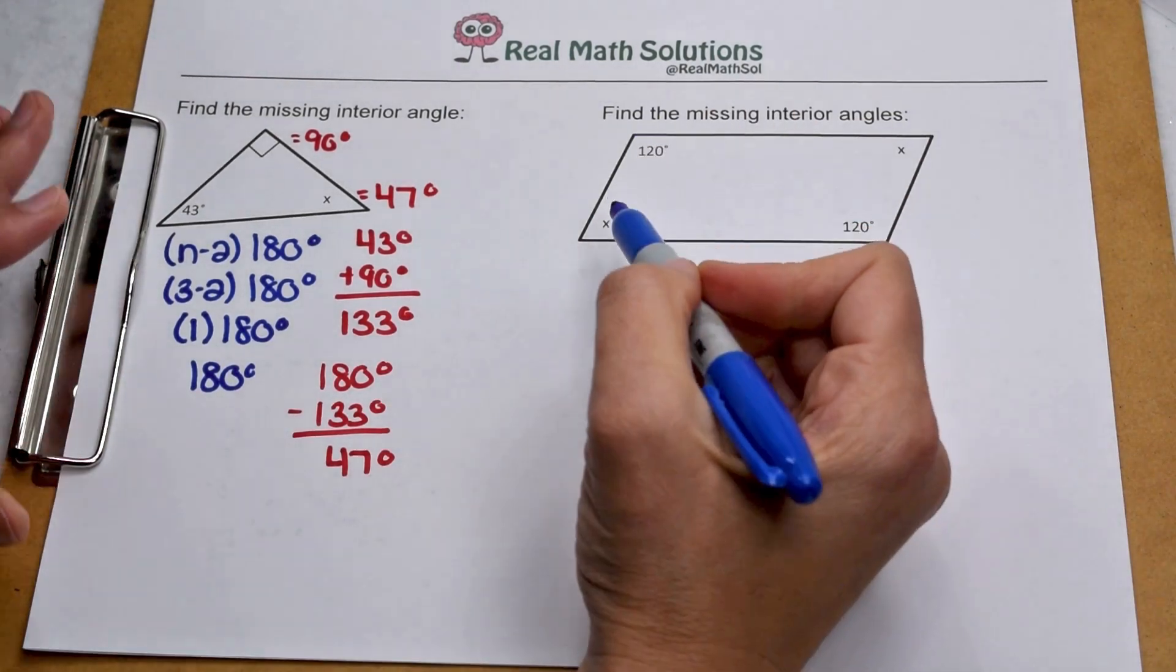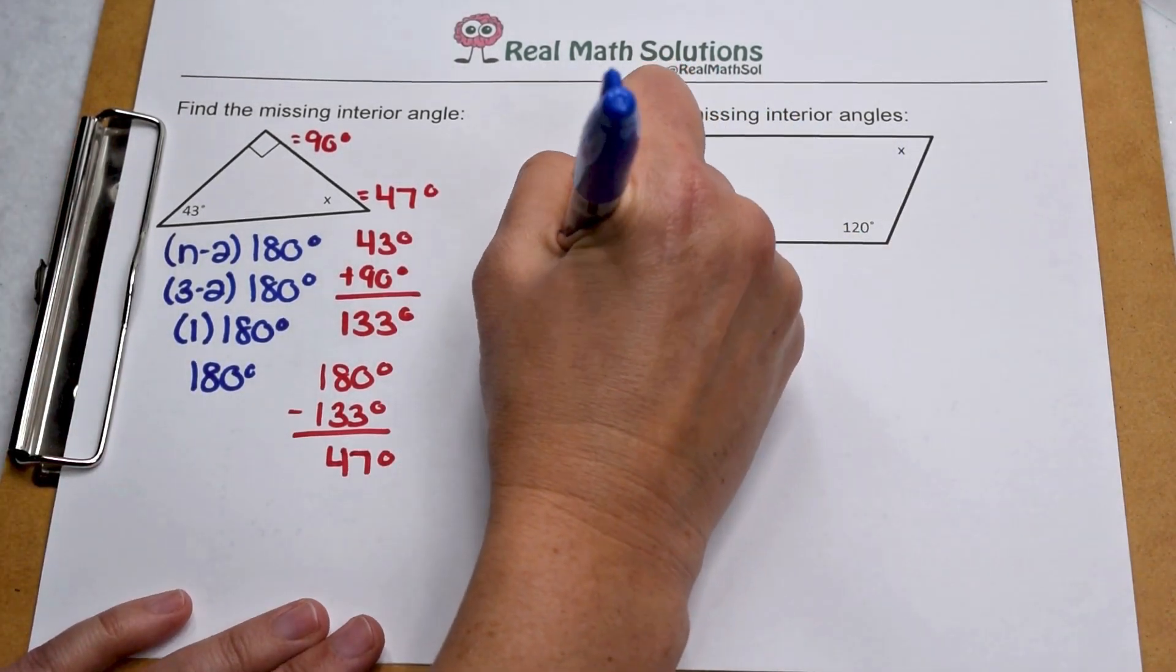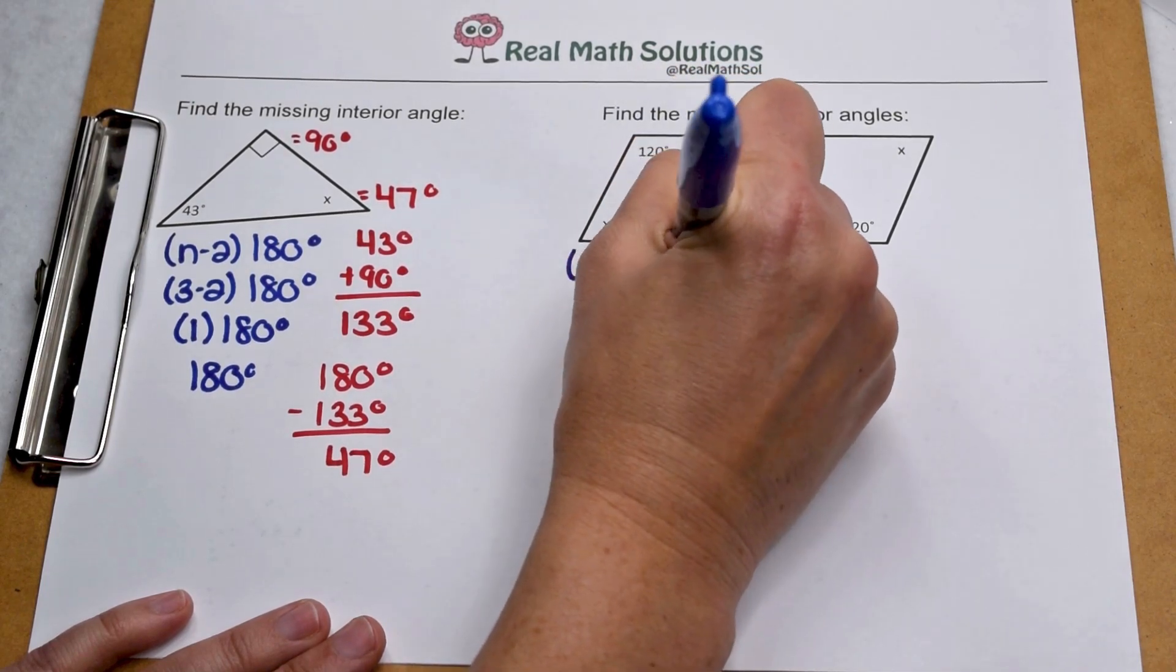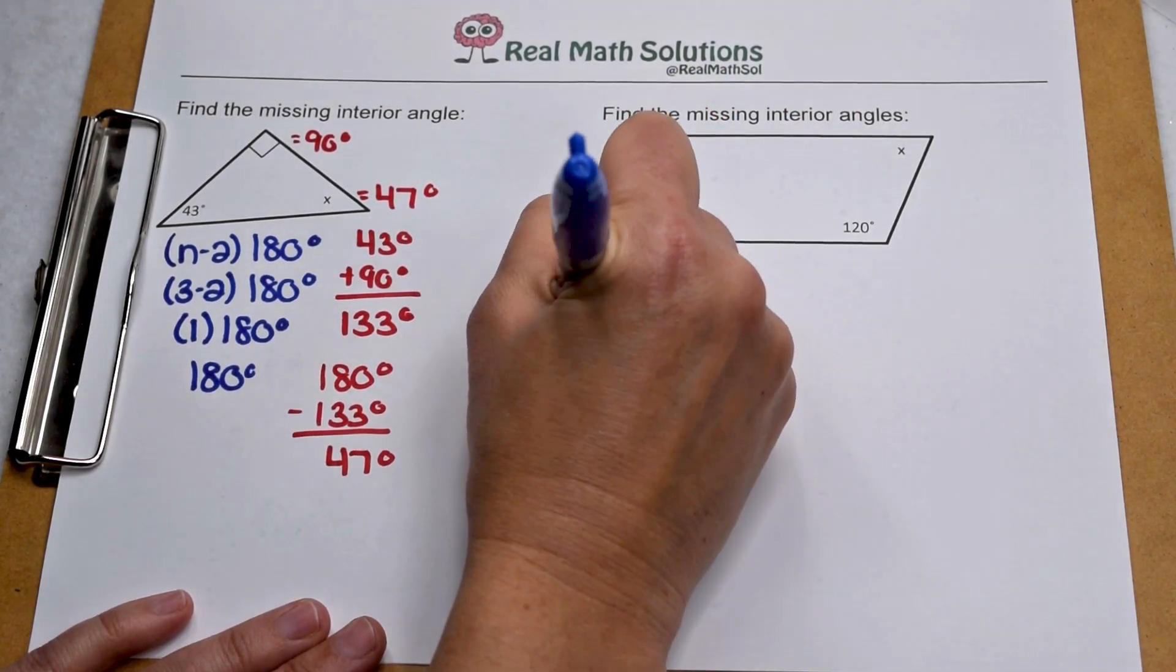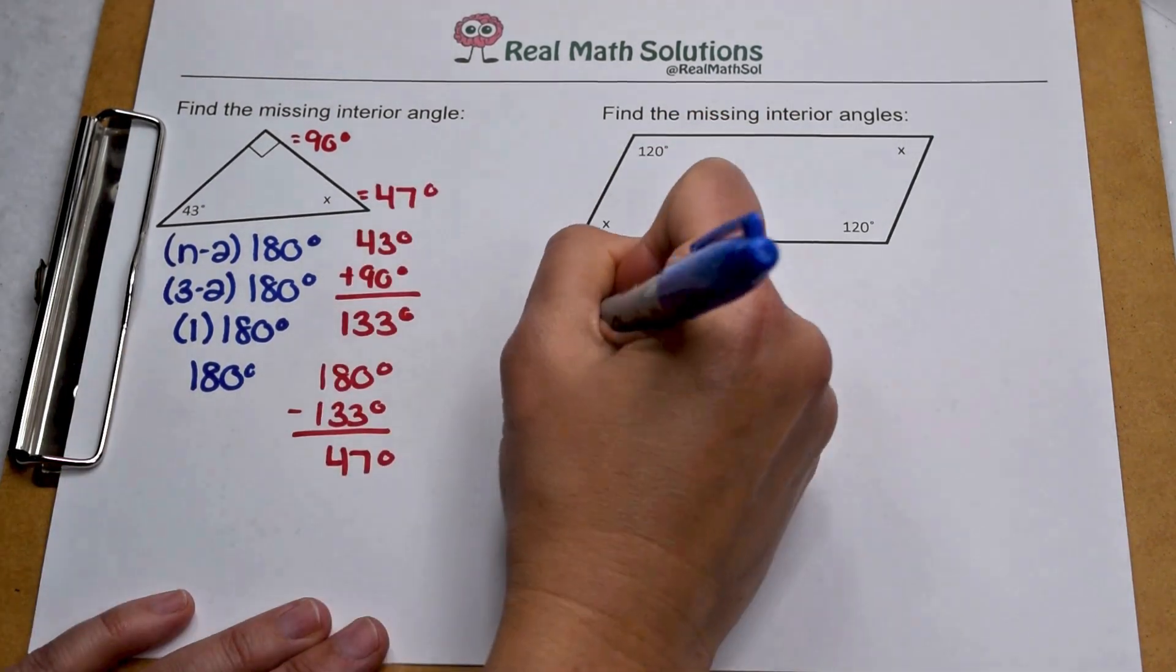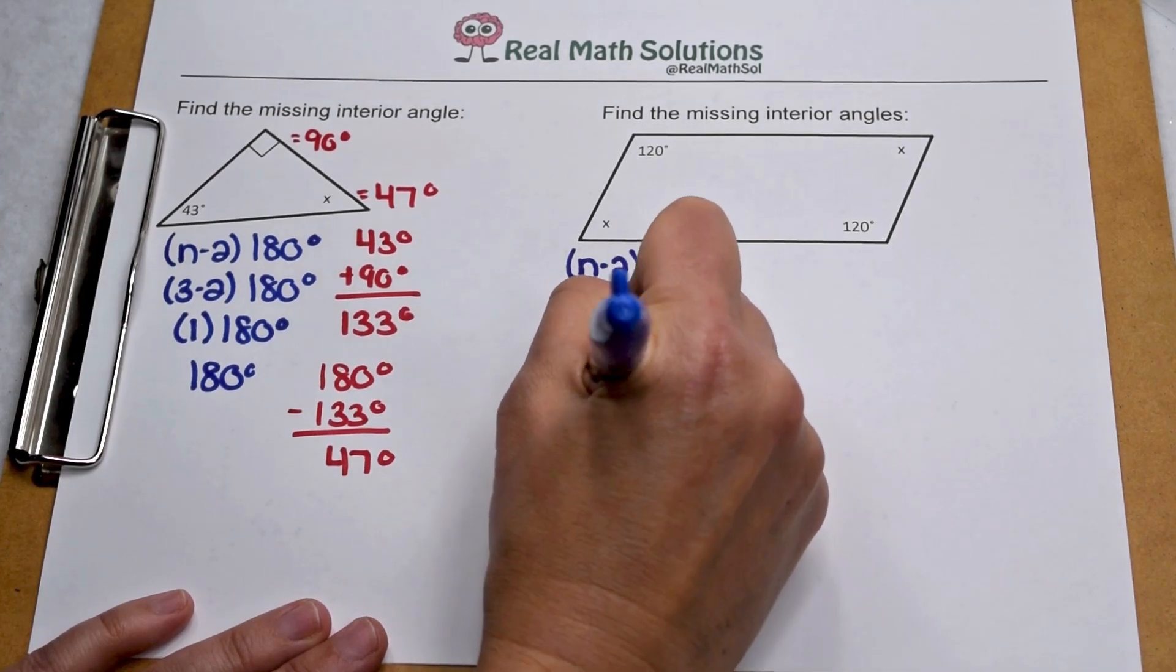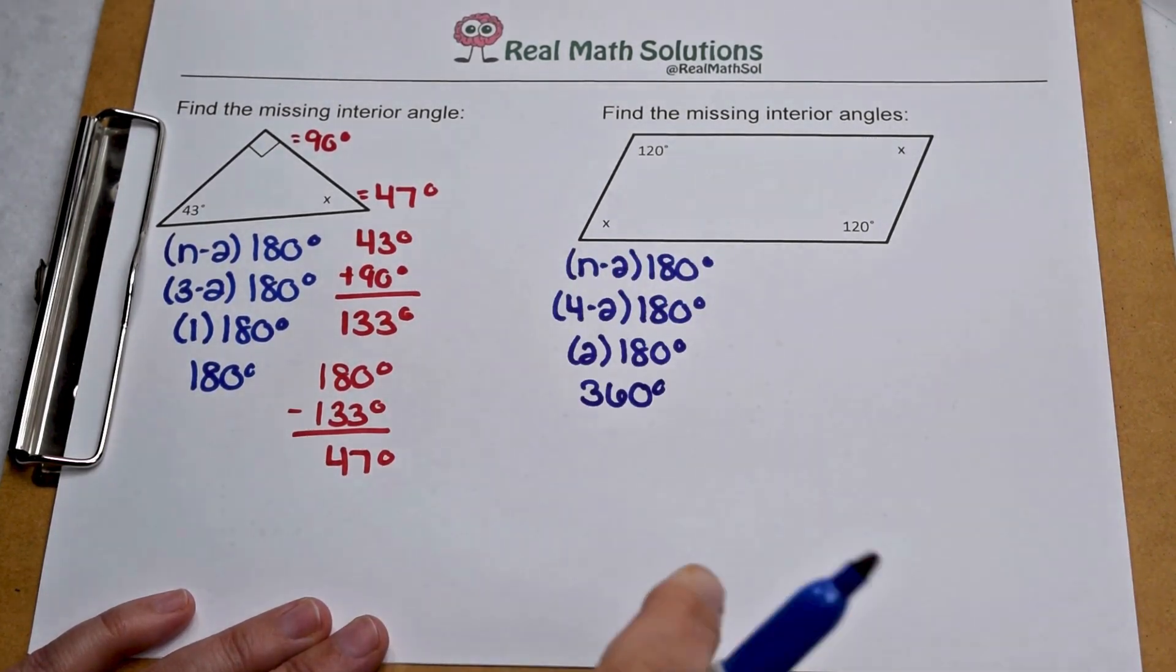We can use the same process on our parallelogram. Our parallelogram is a type of quadrilateral, so to find its interior angle sum, we can still do n minus 2 times 180. We have four edges to work with, so 4 minus 2 times 180. 4 minus 2 is 2, so when we multiply 2 times 180, that tells us we have an interior angle sum of 360 degrees.